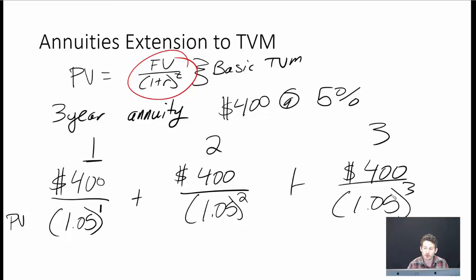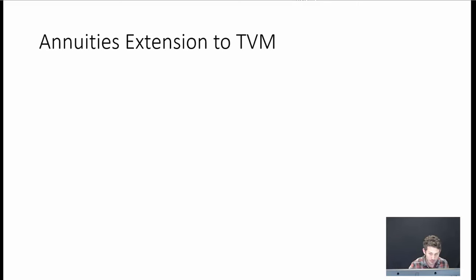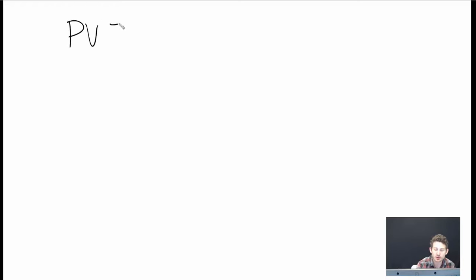So we can take this basic format here, and we can then end up going and formalizing a little bit more, developing an equation for the annuity. And so that equation is going to look just like this. We have the present value is equal to the sum from t equals 1 through n. So however many time periods that we have.